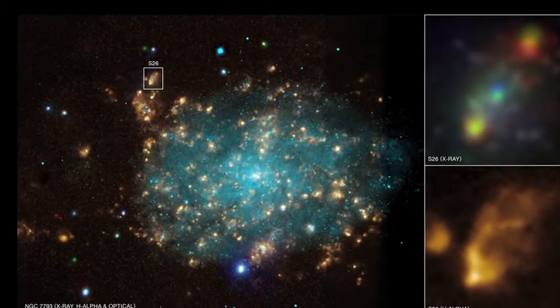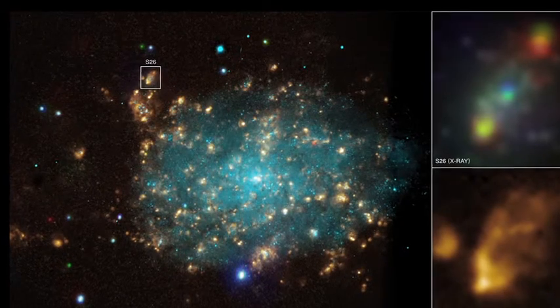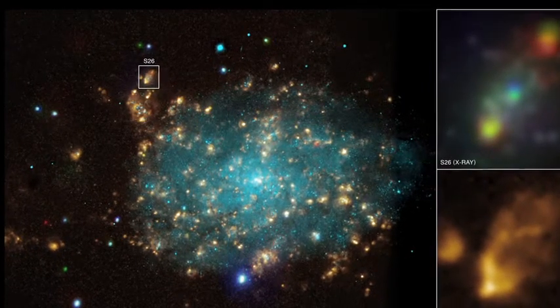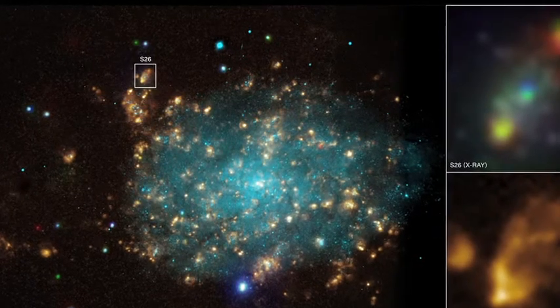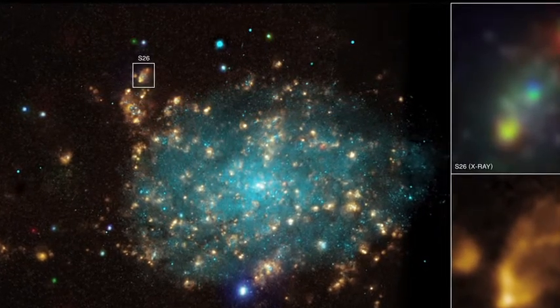What you're seeing is combined data. Chandra data in red, green, and blue. Optical data from the Very Large Telescope in light blue, and optical emission data from the CTIO 1.5-meter telescope in gold.